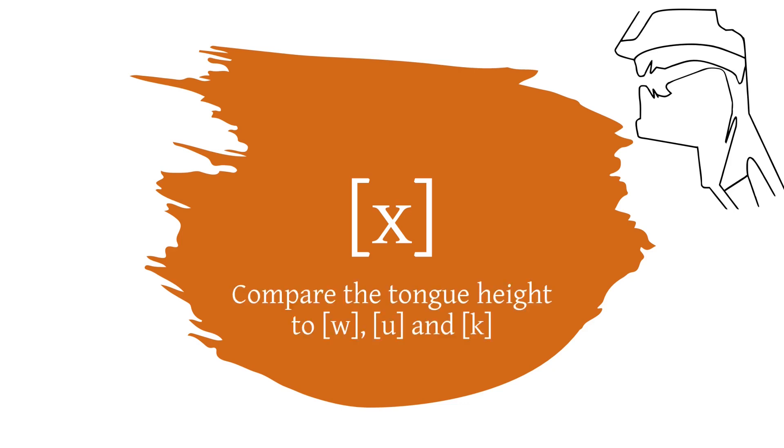The voiceless velar fricative, ha, is a sound often transcribed by linguists. It is defined as being pronounced at the velum, which you can see in the top right corner. To get a feeling for this place of articulation,